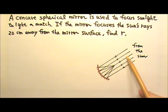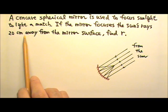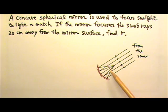And those light rays parallel to the principal axis will all bend and go to the focal point. So if the light rays get focused 20 centimeters away from the mirror's surface, that means that this distance is 20 centimeters and that is the focal length.